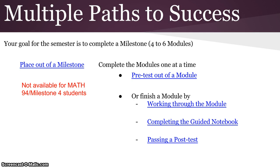Your goal for this course is to complete a milestone by the end of the semester. A milestone consists of anywhere from four to six modules, depending on the course you are in. It's important for you to be aware that there are multiple paths for you to complete that milestone, or to progress through the different modules in this course.